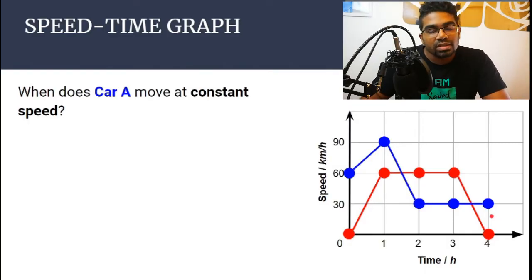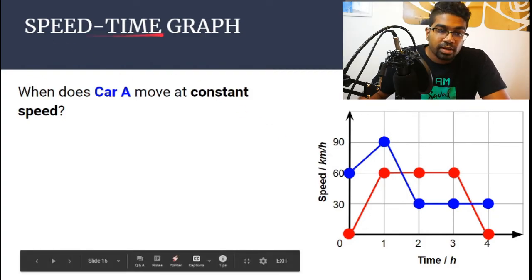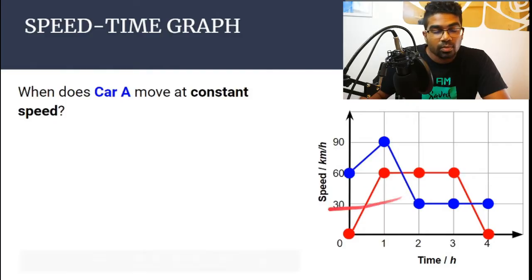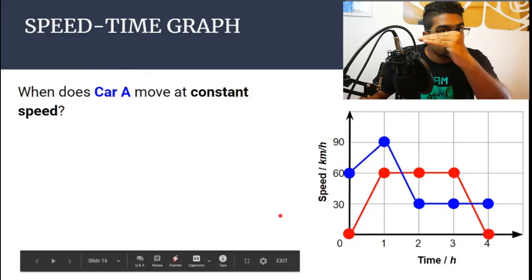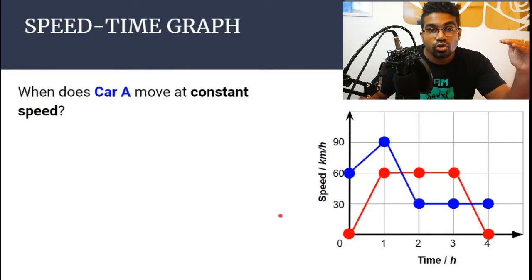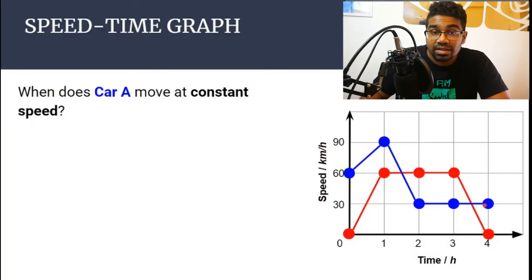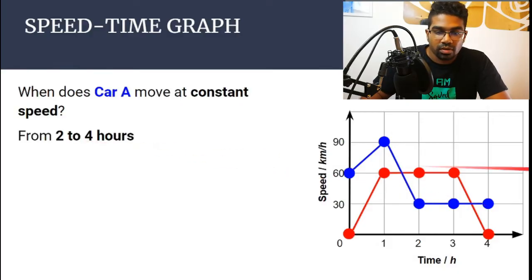The acceleration on a speed-time graph is determined by the gradient. When the gradient is 0, the car does not change its speed. When the gradient is 0, the line is a horizontal line — there is no slope, it's just a flat line. So this is the part where car A is moving at constant speed: from 2 to 4 hours.